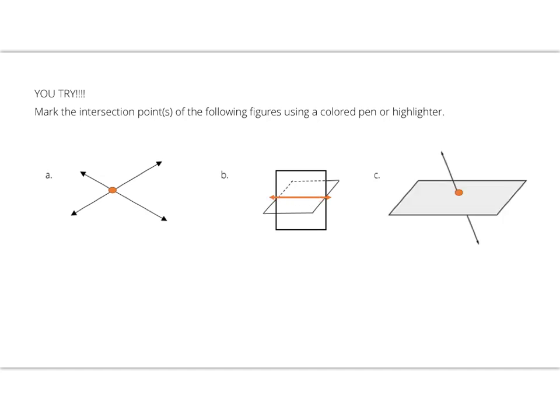In our final figure C, we have a plane and a line intersecting, and that point of intersection is a single point.